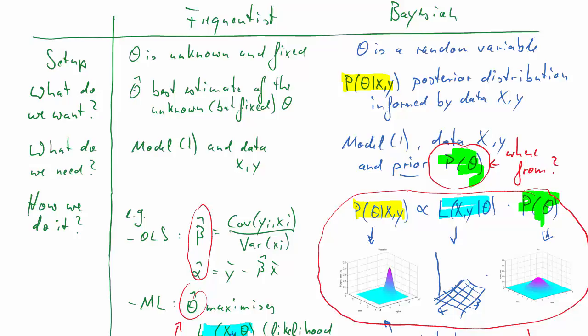All of these differences really originated from this different assumption at the beginning. A frequentist assuming that theta is unknown but fixed, and a Bayesian assuming that theta is unknown but is really a random variable. Here we go. Thank you.